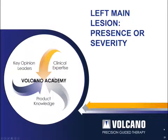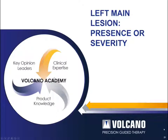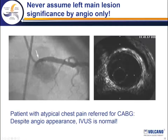Let's move to left main lesions. The primary issues here are whether there is in fact a lesion or, if there is one, how severe is it. This is the one area of the vasculature where intravascular ultrasound is probably equivalent to fractional flow reserve for determining lesion severity. We should never assume that a left main is significant by angiogram only.